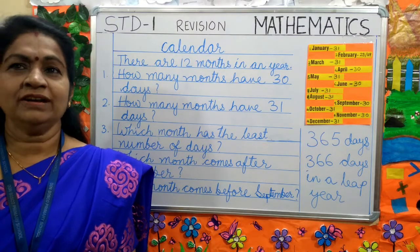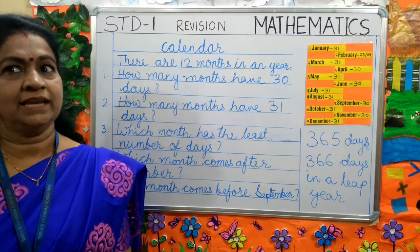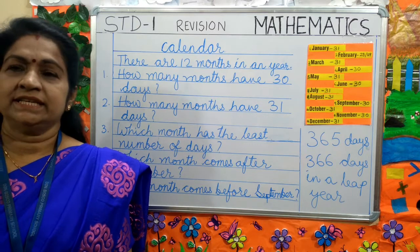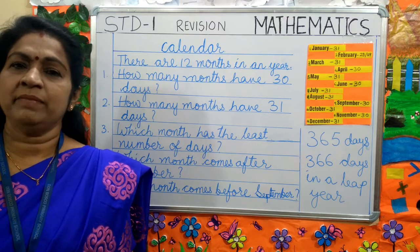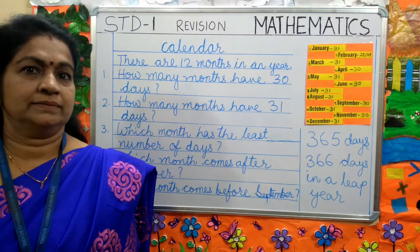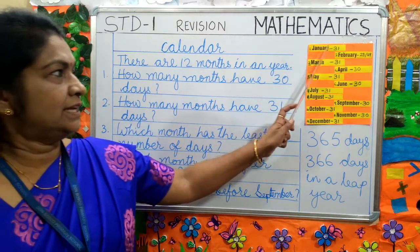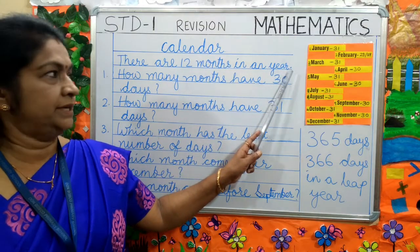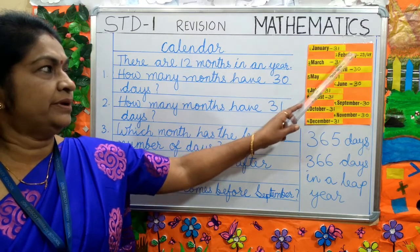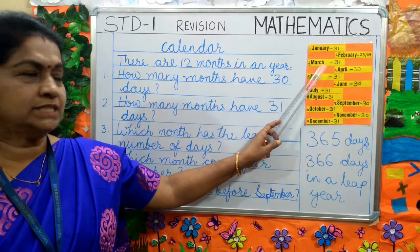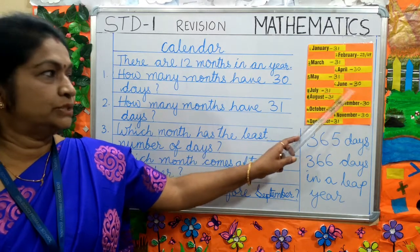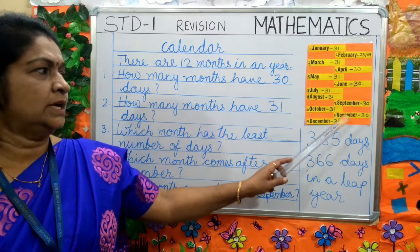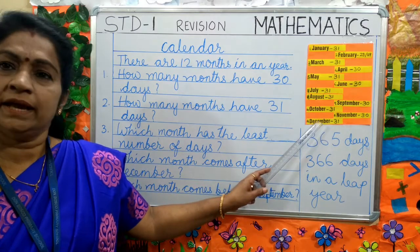Our next topic is calendar. Do you know what is a calendar? A calendar shows the days and months of a year. Here is a calendar. There are 12 months in a year. They are January, February, March, April, May, June, July, August, September, October, November and December.